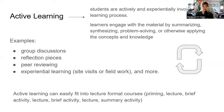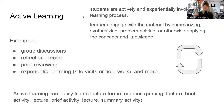Active learning means students are actively and experientially involved in the learning process — engaging with summarizing, synthesizing, problem-solving, applying knowledge. Examples include group discussions and reflection pieces. Peer reviewing is excellent for that. Experiential learning like fieldwork and site visits — that's all active learning. Students are actively engaging with the materials being presented.